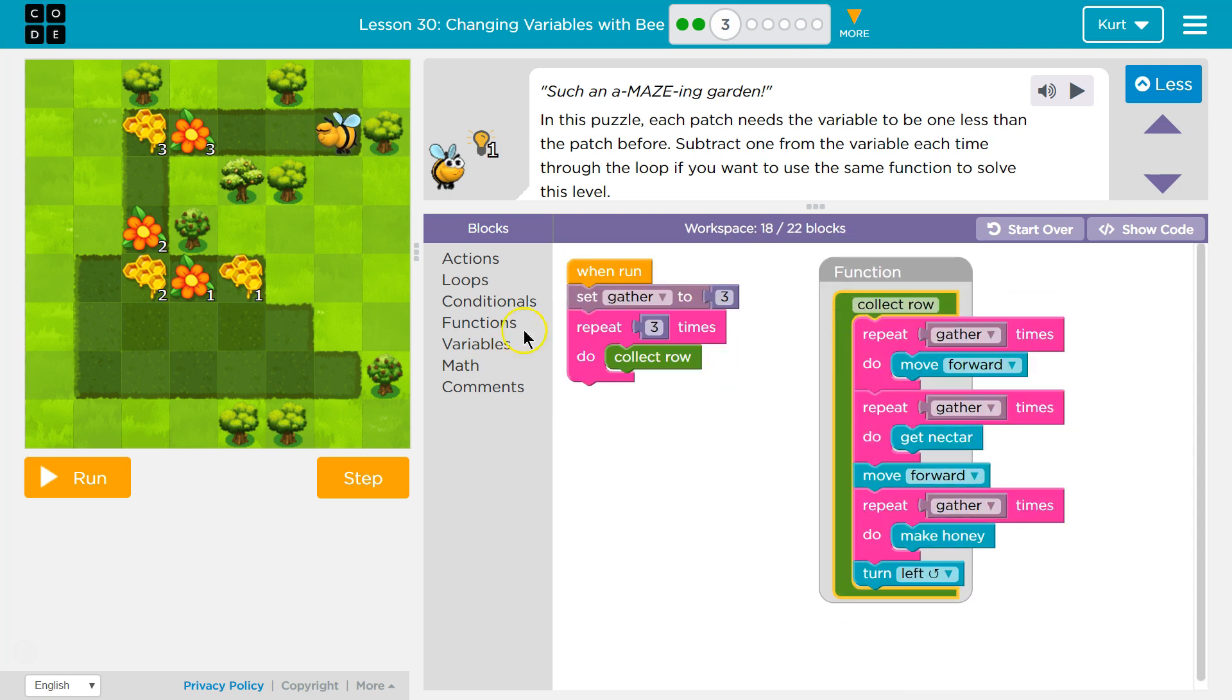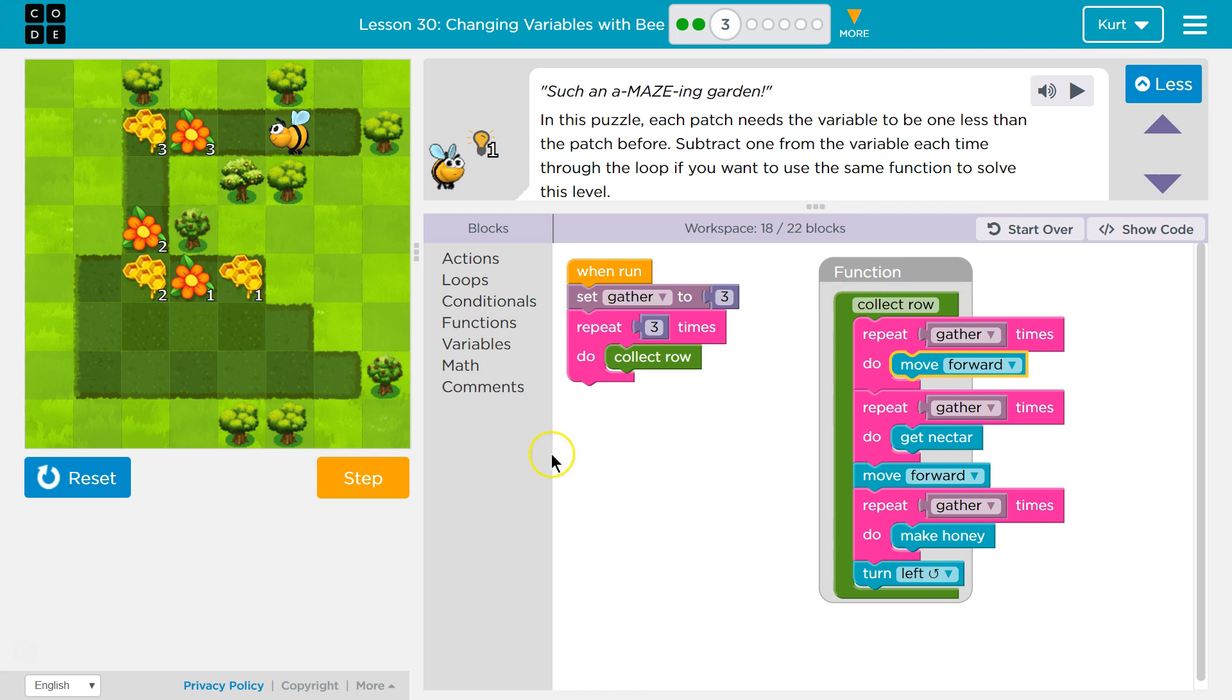So I'm going to start by stepping through. Alright, so we hit run, we set gather to 3, we repeat 3 times and we start to collect. Collect, move forward. Collect row is the - we start collect row function, and we gather, repeat until we're done gathering. Oh no, repeat gather 3 times. So remember, a computer reads that as gather is 3.